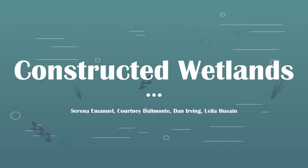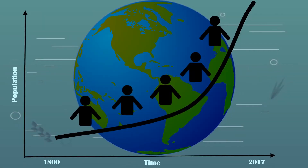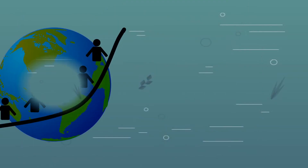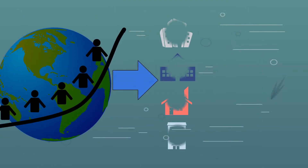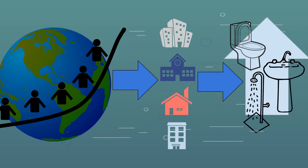Constructed wetlands. Our world is continuously growing at a rate of 1.1 percent per year — from 1 billion people in 1800 to a whopping 7.6 billion people in 2017. Increased population means more buildings and more toilets, baths, and showers to support everyday needs, and this means increased wastewater.